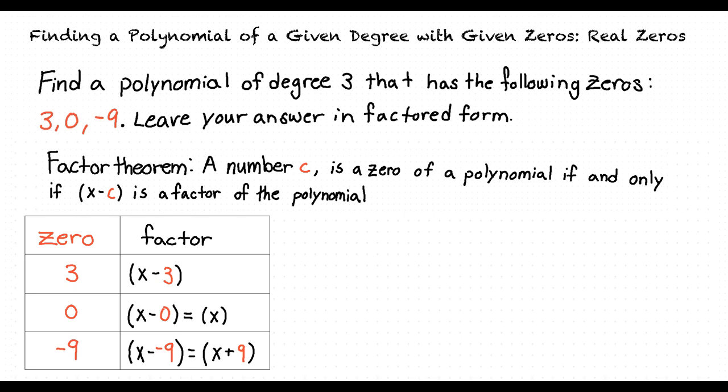Now that we have the three factors for our polynomial, we can put them all together to create our polynomial of y equals x minus 3 times x times x plus 9.